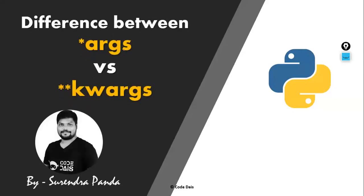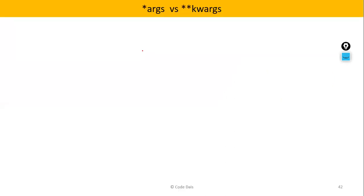Hi guys, welcome back to Code Dias. In this particular video, I am going to discuss what exactly the differences between *args and **kwargs. I hope you already know this *args and **kwargs programmatical concept. So in this video, I will just discuss the summary kind of things between args and double star kwargs. Complete theoretical discussion — why because each and every point with programmatical examples I already covered in previous videos. So this is a theoretical, summary, conclusion kind of video.